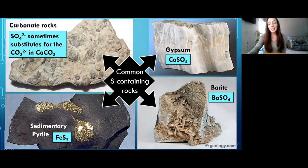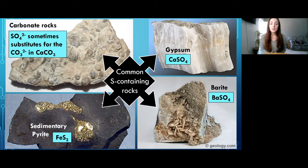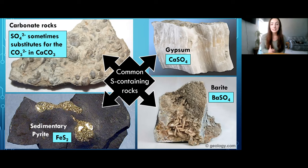Before getting into actual isotope data, let's talk about what kinds of rocks we get these isotope ratios from. Common sulfur-containing rocks include pyrite, which is iron sulfide. Pyrite is really important because it's a sulfide rather than a sulfate, and it's one of the more abundant sulfides we can use for sulfur isotopes, especially of biogenic origin.